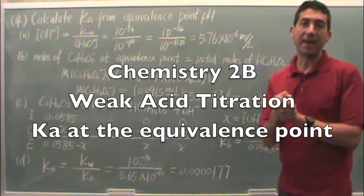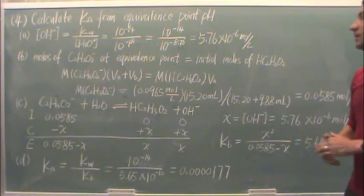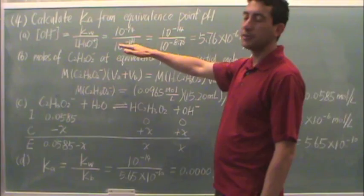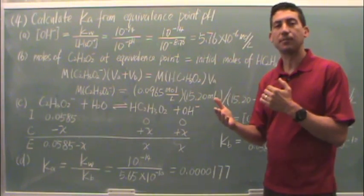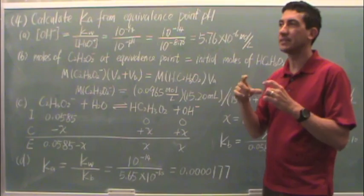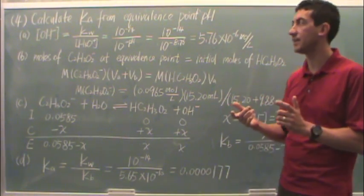This part is to find Ka at the equivalence point. So first thing you want to do is find the concentration of hydroxide because we're going to use up all the weak acid, and so this is actually going to turn out to be our x value in the ICE table.